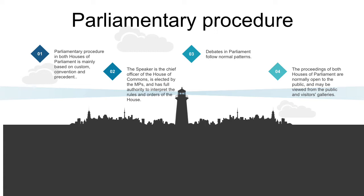MPs enter either the yes or no lobby to record their vote, but they may also abstain from voting. The proceedings of both Houses of Parliament are normally open to the public and may be viewed from the visitors' galleries. The transactions are published daily in Hansard, the parliamentary newspaper, which records most events and are also widely commented upon by the media. The proceedings of both Houses are now televised, and radio transmissions may be broadcast live or at a later time in recorded form.